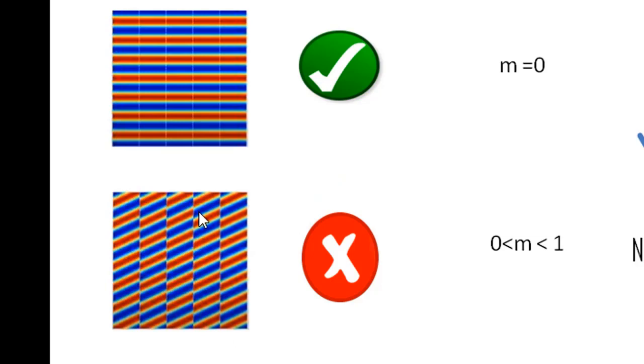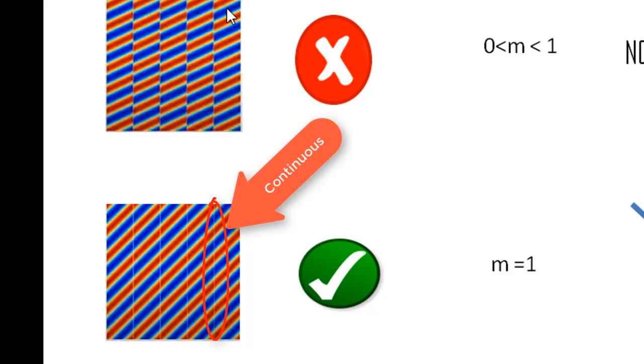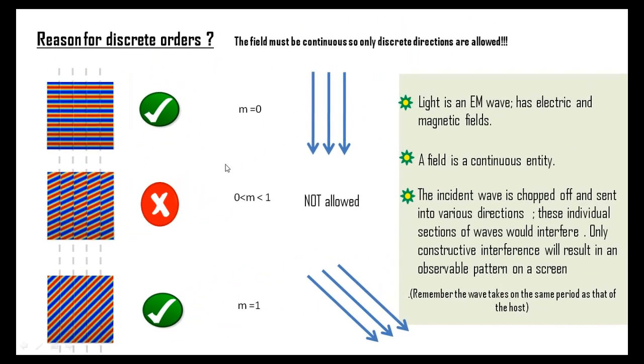The third picture is what we call the spectral order 1. Since all the sections have been rotated by equal angles and have come into a position where there is a continuous pattern visible, this would create a sustained pattern on the screen. Therefore, we make a crucial observation. The field must be continuous so only discrete directions are allowed. These allowed directions are called diffraction orders and these are calculated using the grating equation.